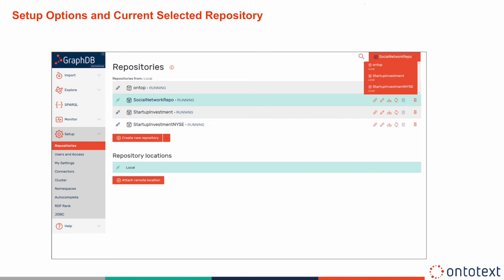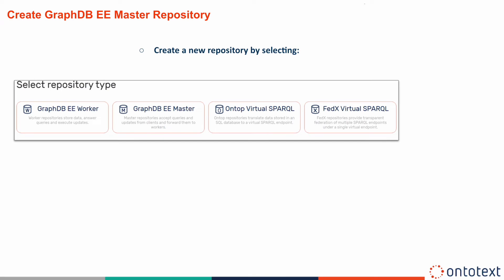In the Setup menu, you can manage and create new repositories or connect to remote locations, manage users and their access, create and manage GraphDB connector instances, create or modify a cluster, view used namespaces, enable autocomplete, and add JDBC configuration. The Current Repository menu item allows you to pick from a list of repositories and provides information for the currently connected repository.